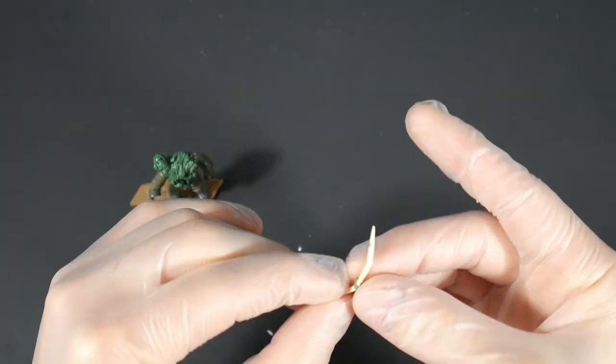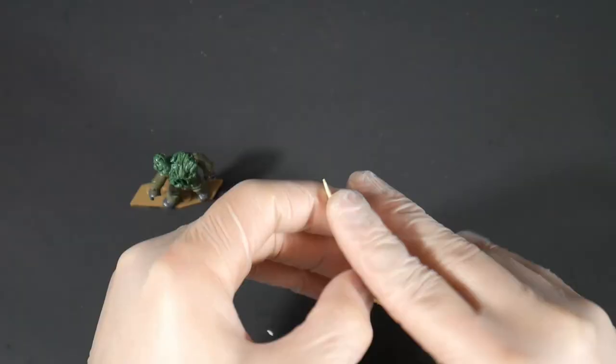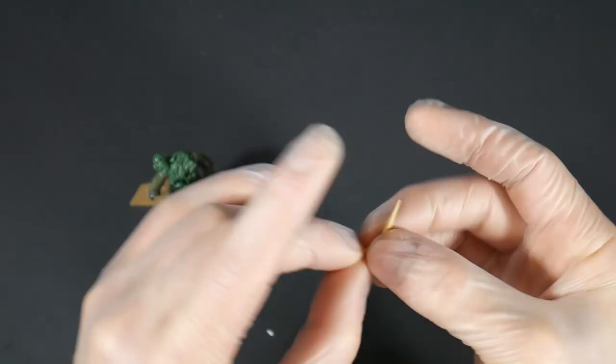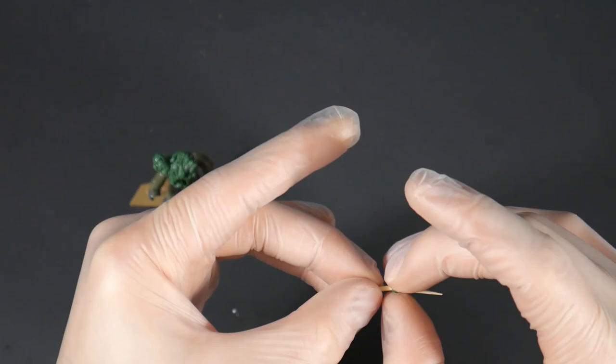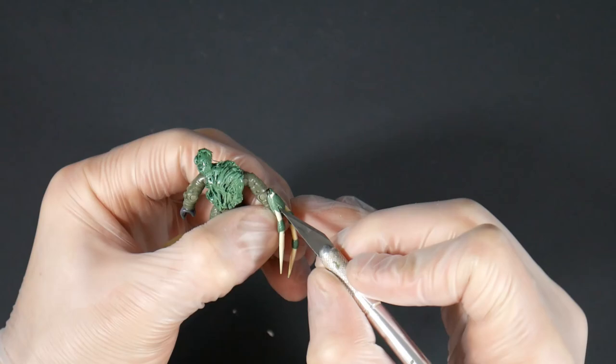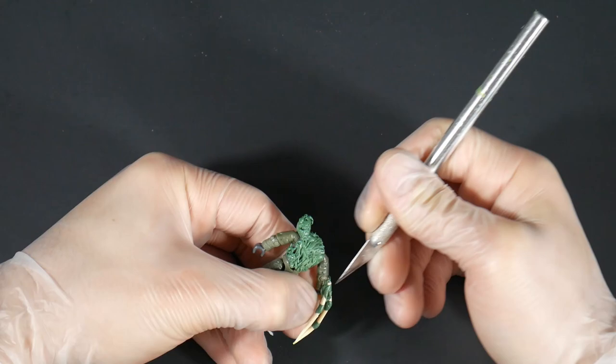Now we're using the toothpicks for the claws. This is a great technique that I love to use. And I'm adding a little bit of green stuff on those breaking points that I use to bend the claws, just so they hold up a lot better later on. And then I attach them right on and sculpted around the area a little bit to make it seem a little bit more flood looking.